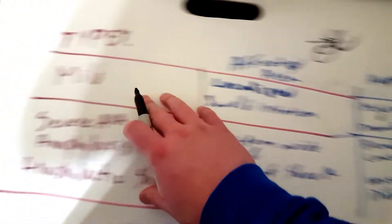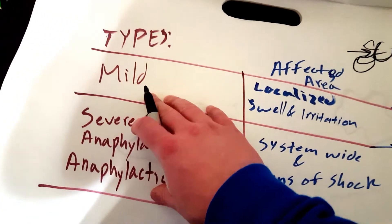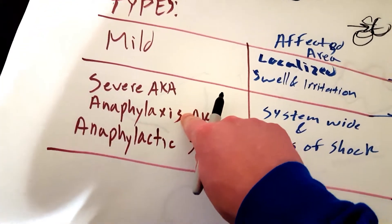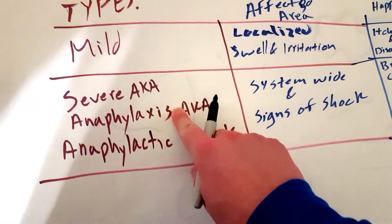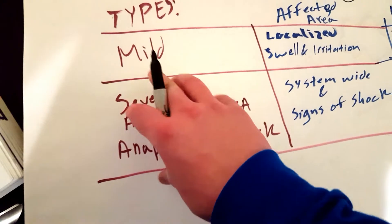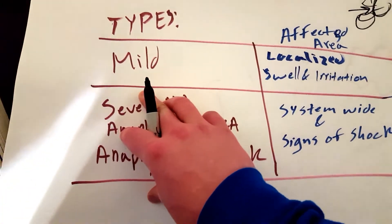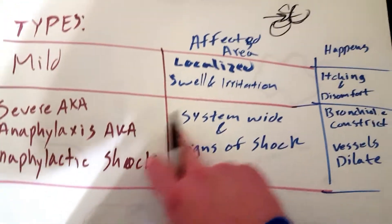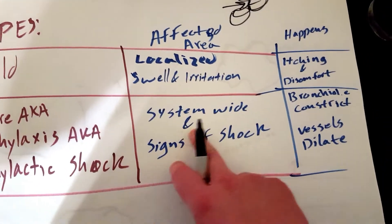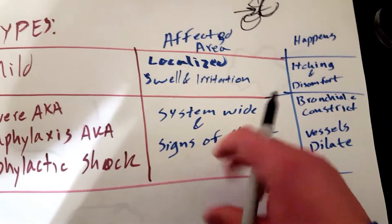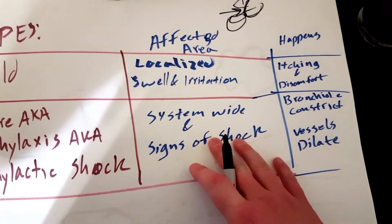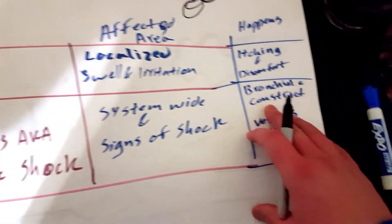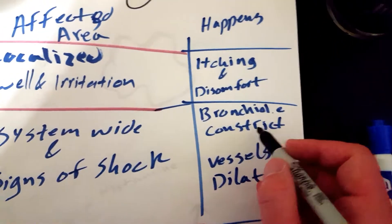A mild allergic reaction really isn't a huge deal, but you want to watch out because it can progress and turn into a severe allergic reaction. A severe allergic reaction is a big deal — you want to act fast. It affects your entire system: your vessels, your lungs, and all of your skin.